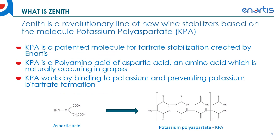Zenith is a revolutionary line of new wine stabilizers based on the molecule potassium polyaspartate, or KPA. KPA is a patented molecule for tartrate stabilization created by Anardis and is approved for use in wine by the TTB under 24-250. KPA is a polyamino acid of aspartic acid — aspartic acid is an amino acid naturally occurring in grapes, so KPA is essentially a long chain of aspartic acid. KPA works by binding potassium and preventing potassium bitartrate formation, so it prevents tartrates from forming in wine.